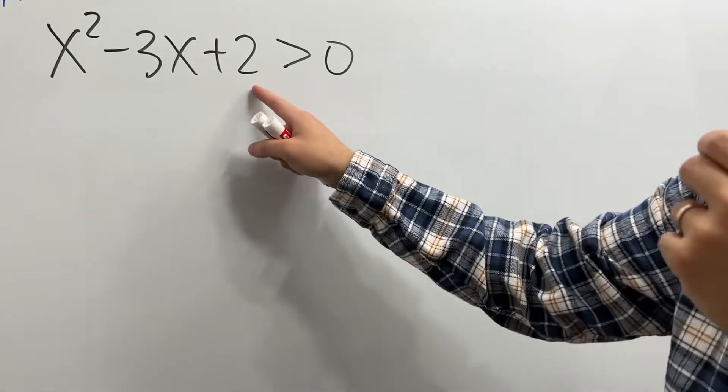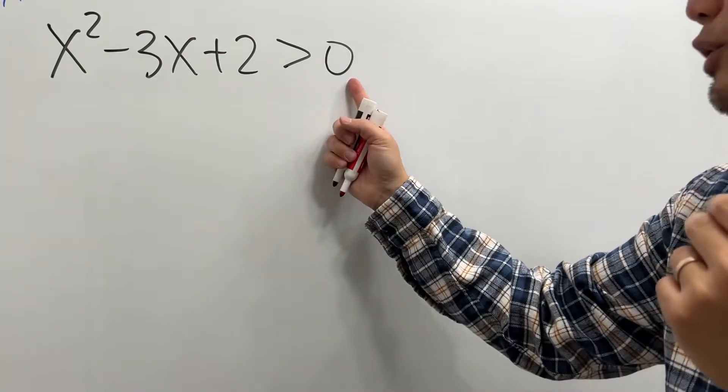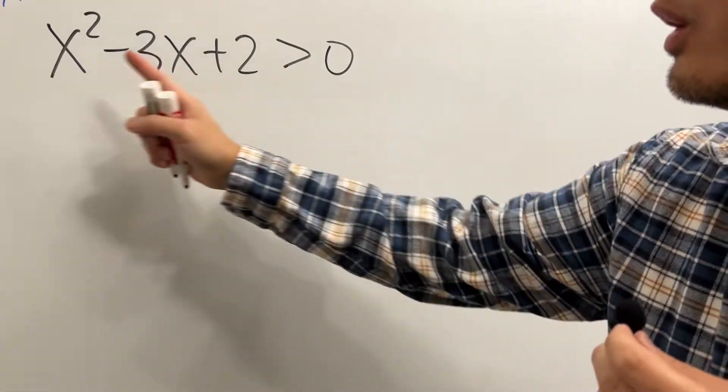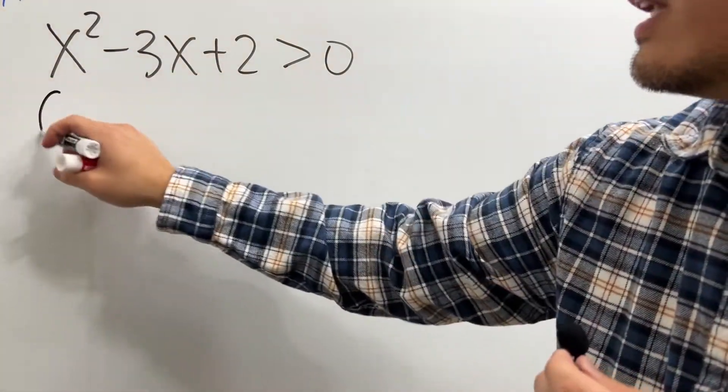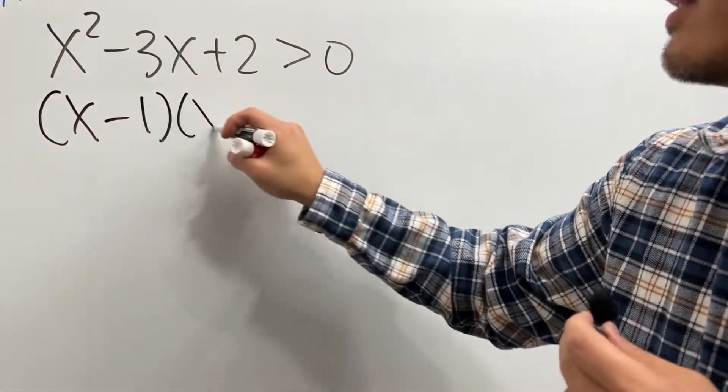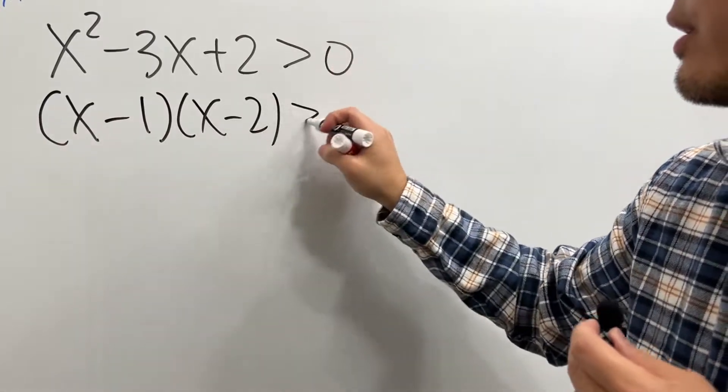How do we solve a quadratic inequality like this? First, make sure one side is equal to 0, then we are going to factor this. We will get x minus 1 times x minus 2, and that's greater than 0.